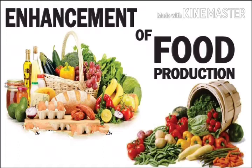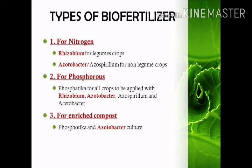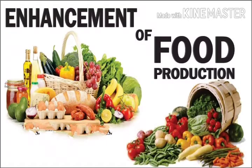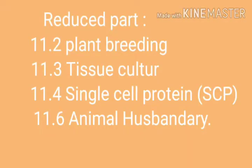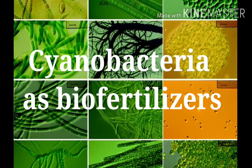In the last lecture, we covered three types of bio-fertilizers: nitrogen-fixing bio-fertilizer, phosphate-solubilizing bio-fertilizer, and compost-making bio-fertilizer. Today we are going to start with the remaining two types — cyanobacteria as a bio-fertilizer and fungal bio-fertilizers. This is your reduced syllabus, and in every video I am sharing this image so you are well acquainted with it.